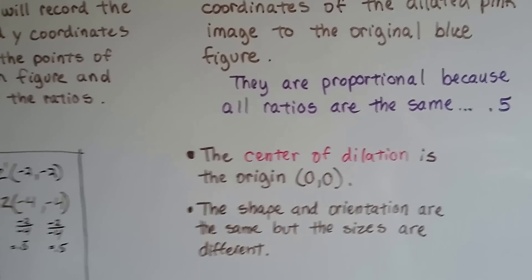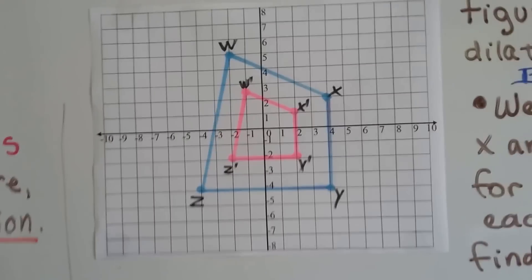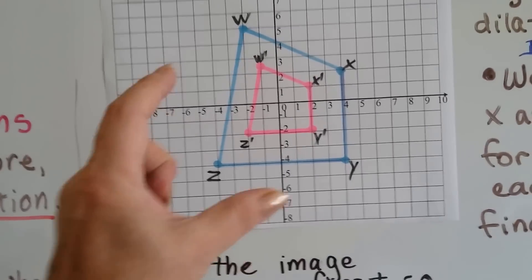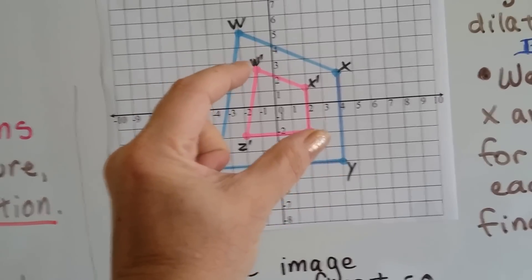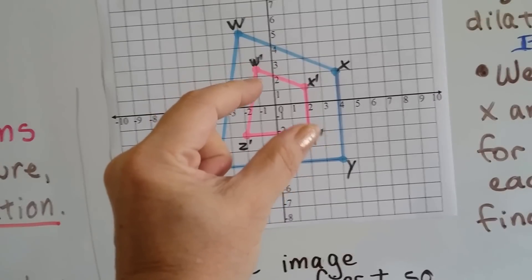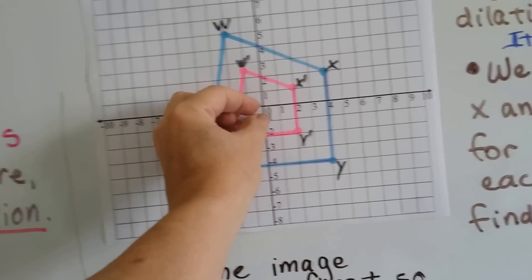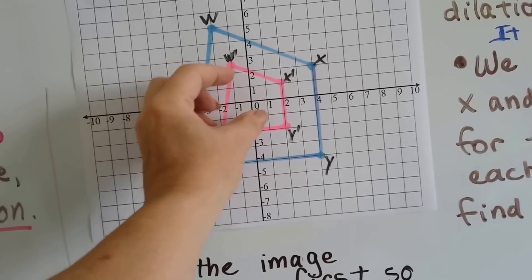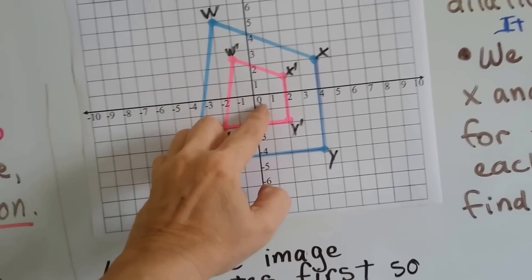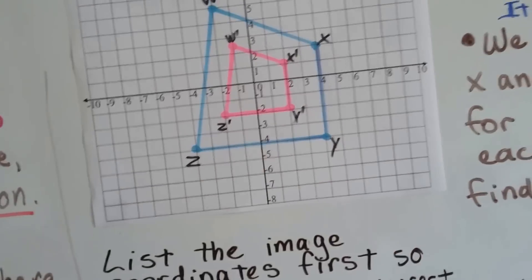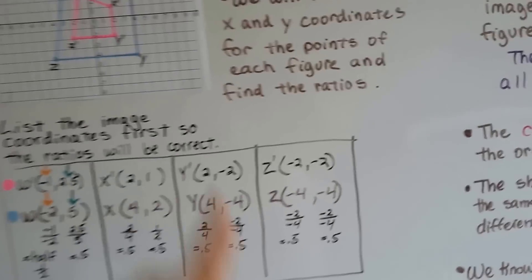The center of dilation is the origin, 0,0. Look at this. Where do you think that the original image came from if the smaller version is here? Well, if we got even smaller, it would get closer to 0,0, wouldn't it? And we could eventually make it a little tiny microscopic shape at 0,0, couldn't we, if we wanted to? So that's the center of dilation. It's right in the very center at 0,0, the origin.